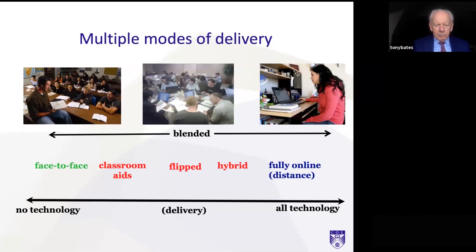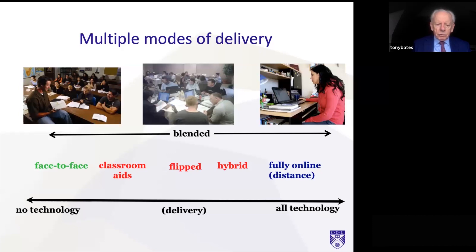At one end we have face-to-face with no technology, although books are a form of technology. Then we have classroom aids like PowerPoint slides and so on. Getting into the middle, we have video recorded lectures which students watch at home, then come into class for discussion. Or we have what I call hybrid learning courses. You can see that you can have any kind of mix of online and face-to-face.